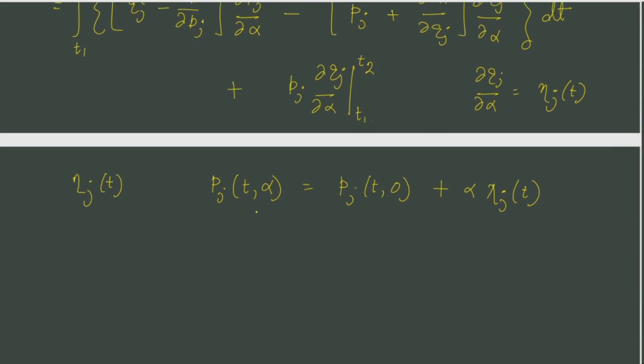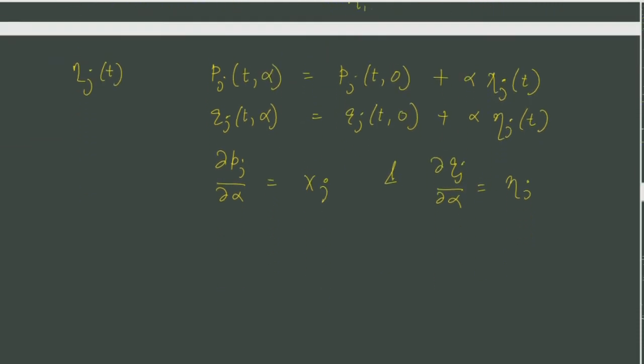So it is exactly same as Qj in the sense. If you recall, this was a variation. This is how we parameterized the variation of Qj. So del Pj del alpha is kappa j and del Qj del alpha is eta j. These are independent.